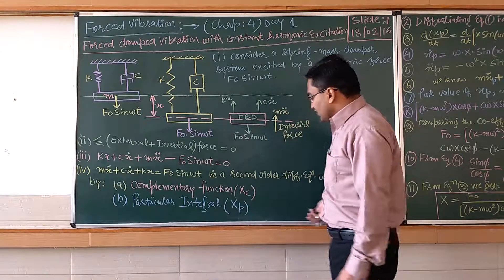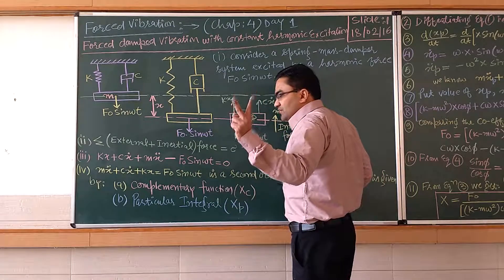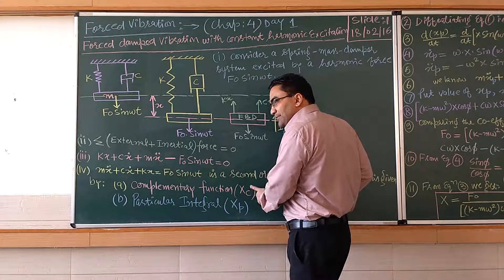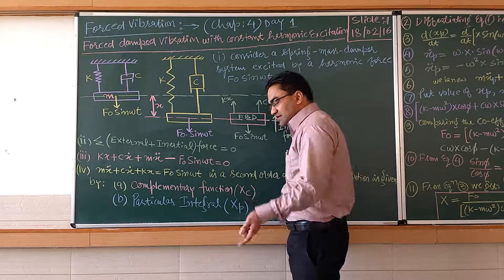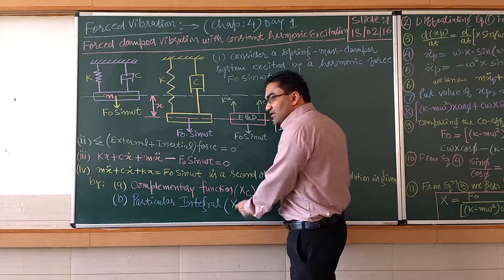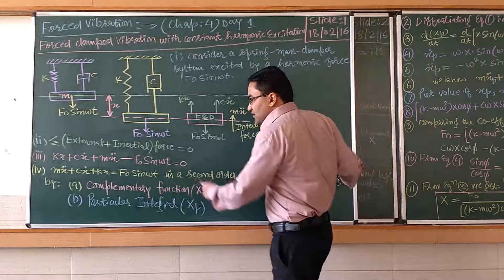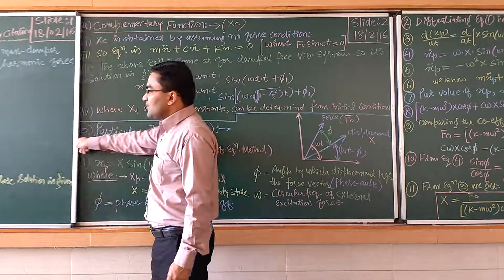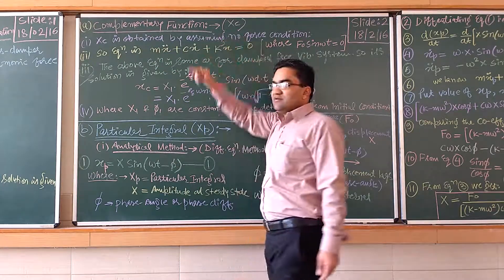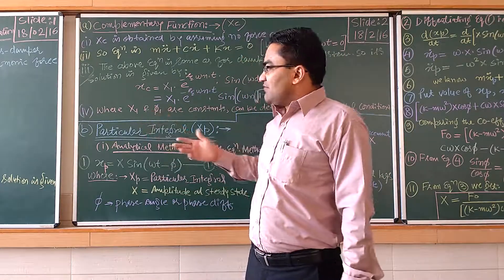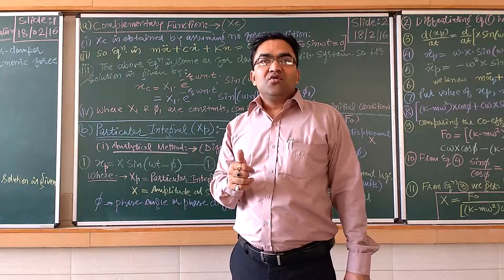Since this is a second-order differential equation, its solution will be given in two ways. The first way is the complementary function, denoted by Xc. The second way is finding the particular integral, denoted by Xp. Let us see how to find the solution through the complementary function. To obtain the complementary function, one assumption is taken: there is no force at all, meaning F₀ sin(ωt) is assumed to be zero.